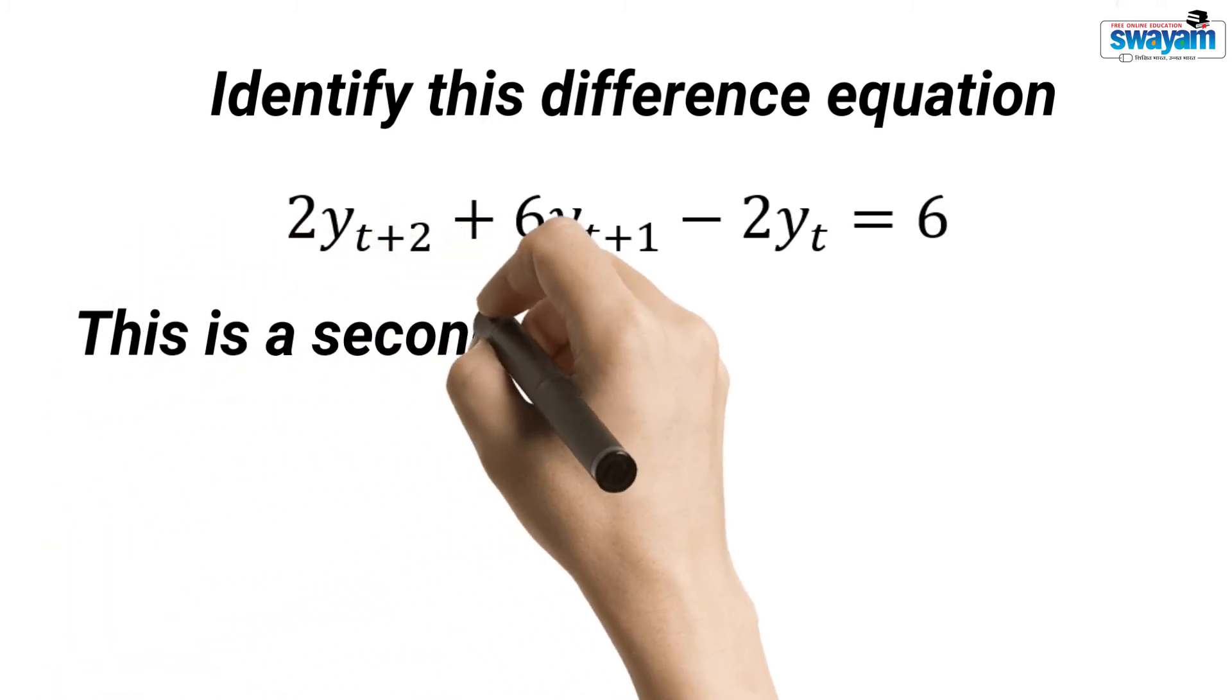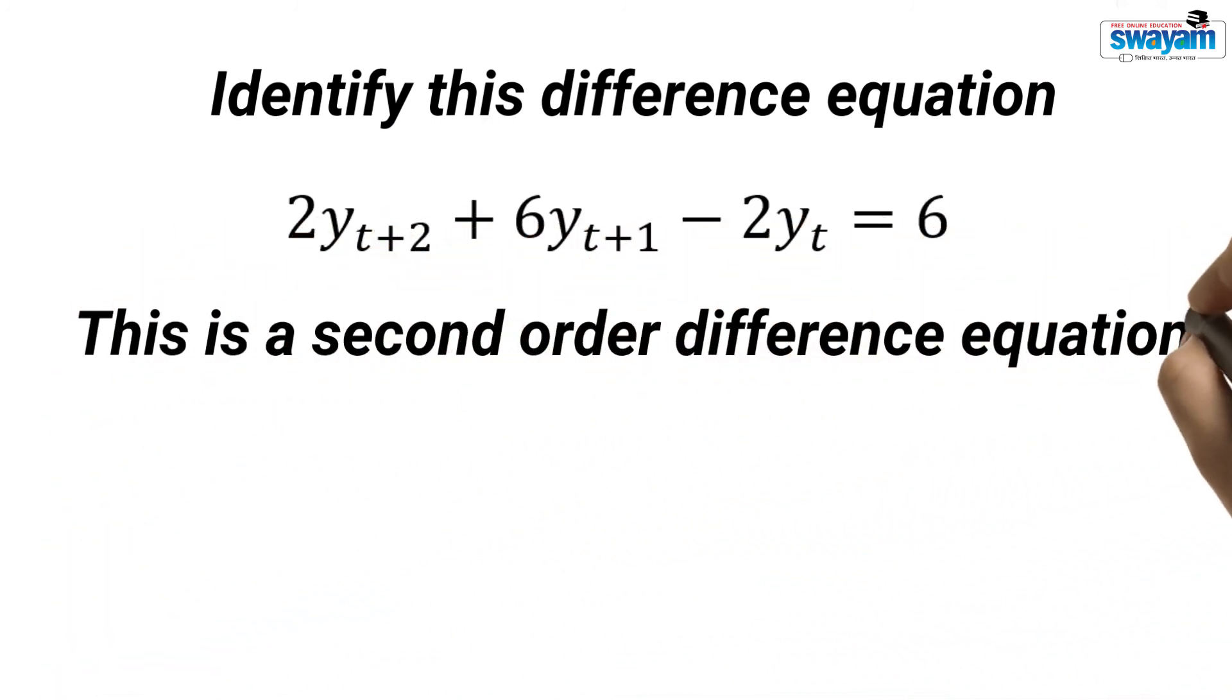This is a second order difference equation because it involves current time period yt, a year after yt+1, and after two years yt+2.